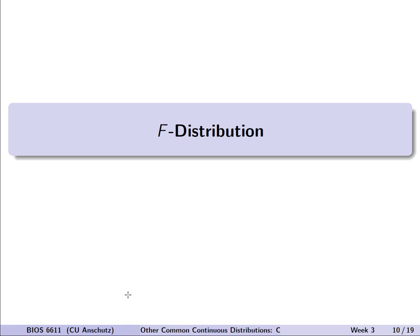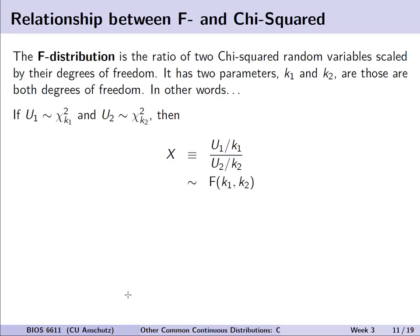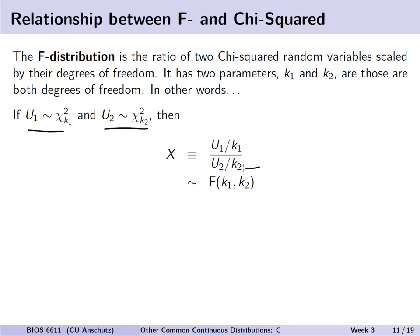Let's now look at the f-distribution. The chi-squared is a component of this distribution — it is the ratio of two different chi-squared random variables each scaled by their degrees of freedom. It has two parameters, k1 and k2. If u1 is chi-squared with k1 degrees of freedom and u2 is chi-squared with k2 degrees of freedom, then defining x as (u1/k1) divided by (u2/k2) gives x distributed as an f-distribution with k1, k2 degrees of freedom.